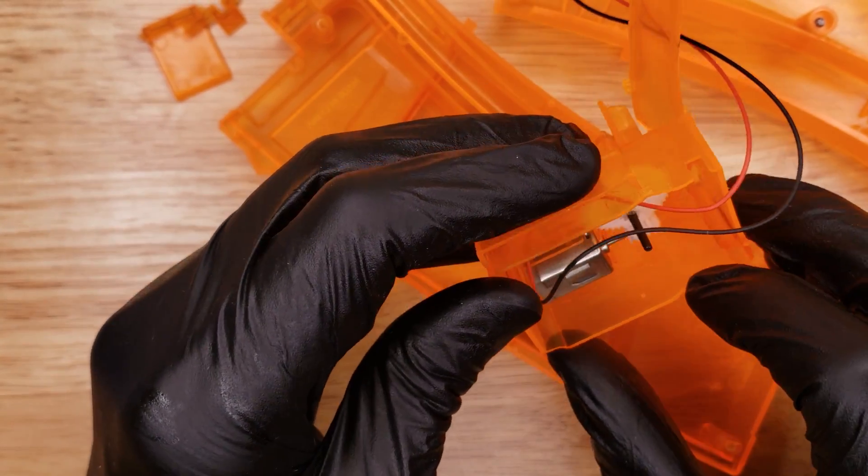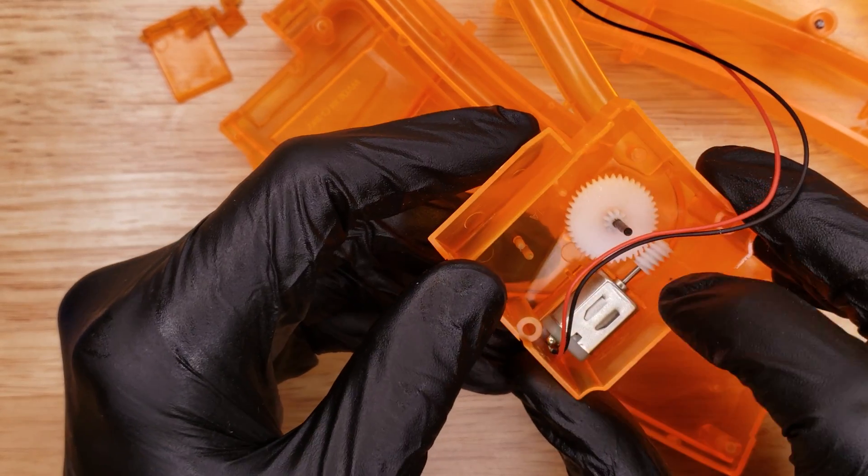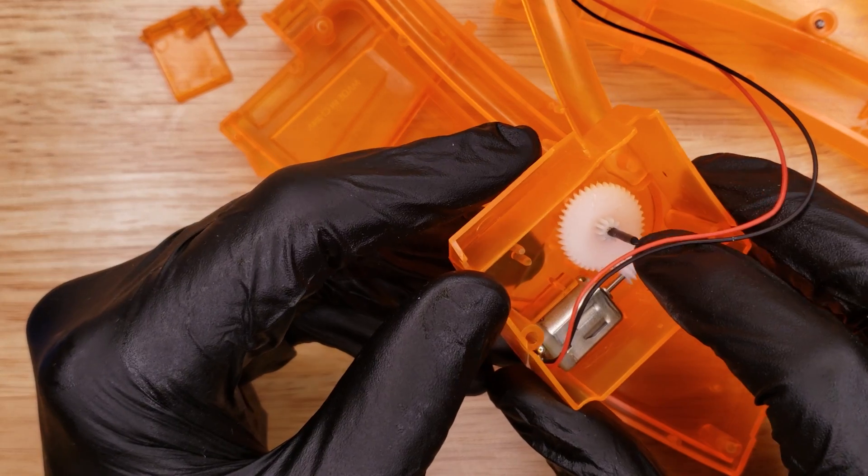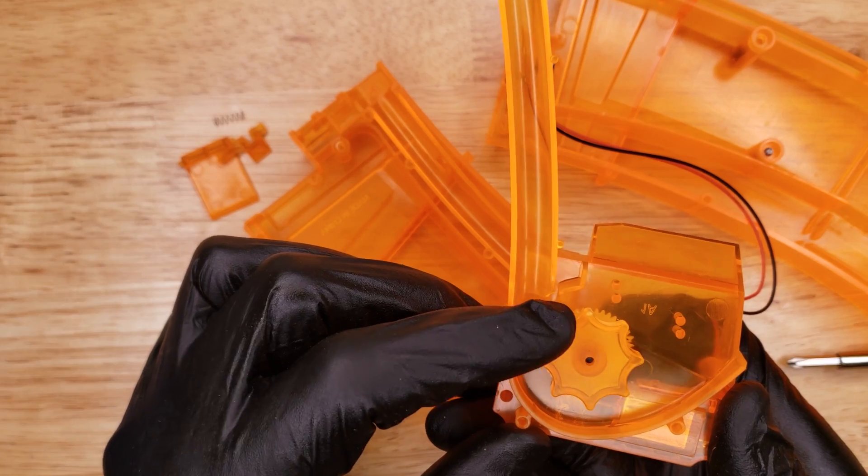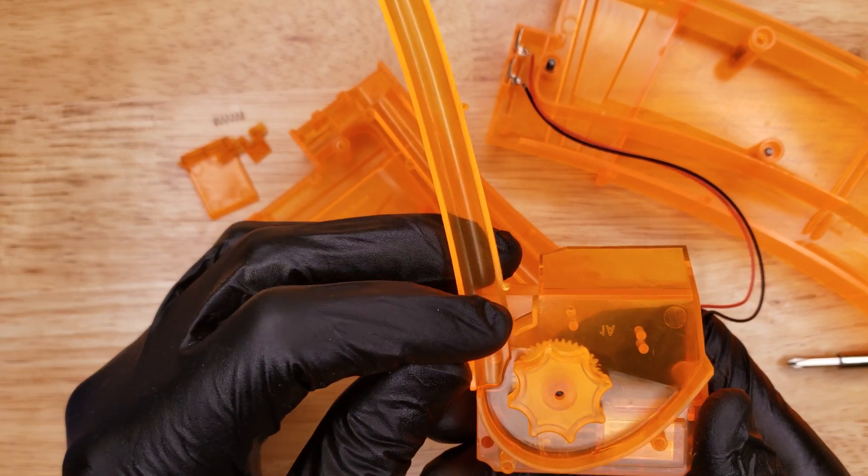And here is our very simple motor drive. It's just a small motor with a worm screw to a spur gear. And it drives a star-shaped gear that grabs the gel balls and pushes them up the feed tube here.